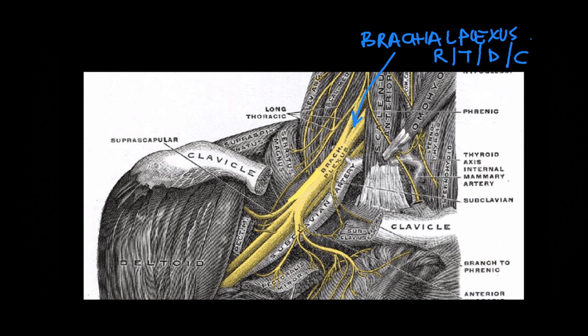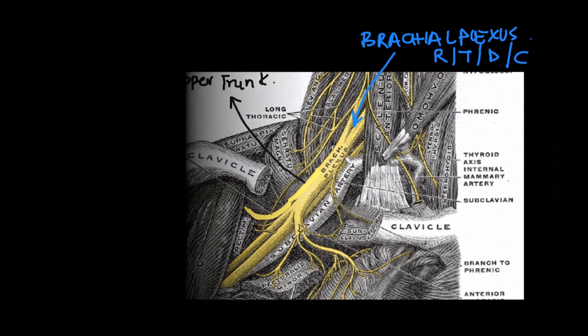The upper trunk gives two different branches: one is the nerve to subclavius, a small muscle lying under the clavicle helping to depress the shoulder joint, and the second important nerve is the suprascapular nerve. The suprascapular nerve hooks backwards, going underneath the omohyoid and trapezius muscle to enter the shoulder.